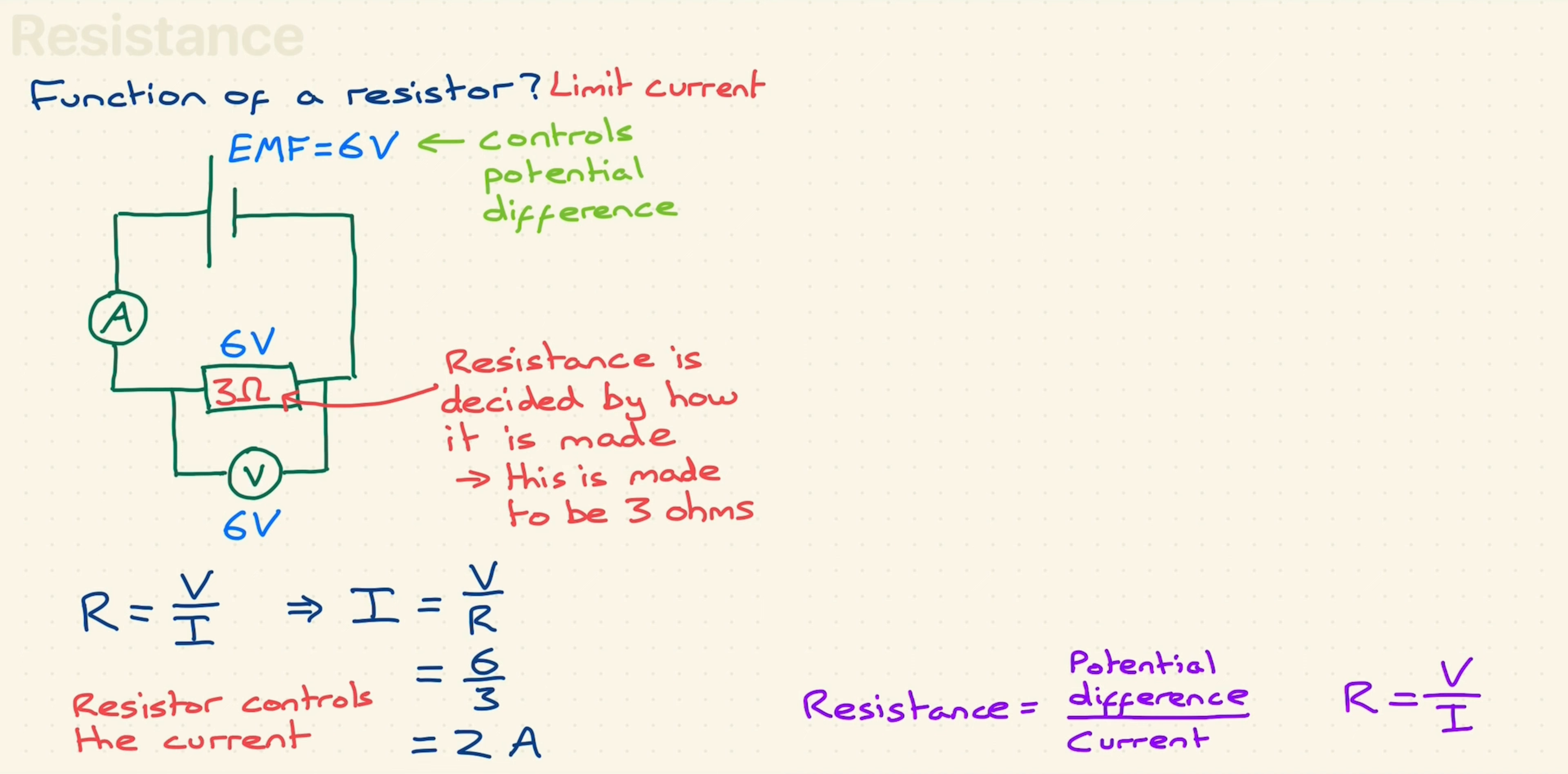This is simple but important. The current does not control the resistance. The potential difference does not control the resistance. The manufacturer, the factory, controls the resistance, and we bought it. We stuck it in the circuit, and now the resistor limits the current. Simple, but fundamentally important to understand.